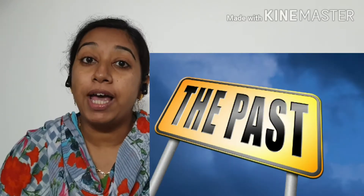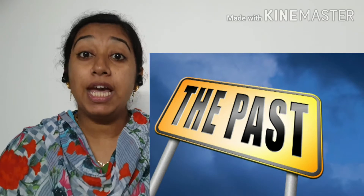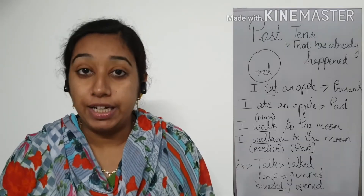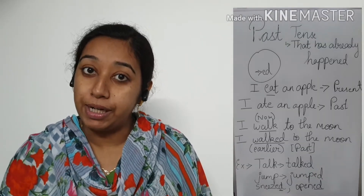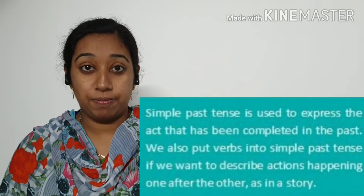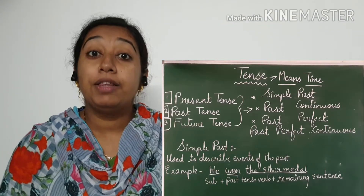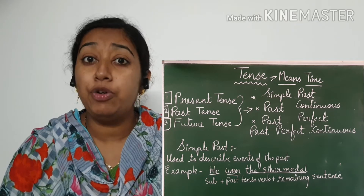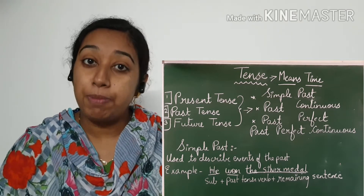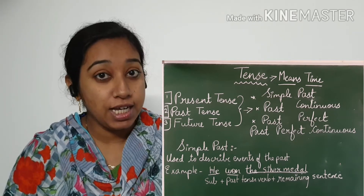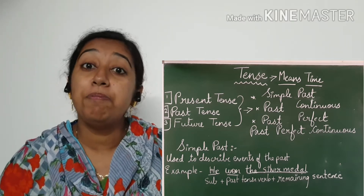Now we are going to learn past tense. What do you mean by a past tense? It indicates the event which has already happened in the past — completed actions in the past. The past tense is divided into four divisions: simple past, past continuous, past perfect, and past perfect continuous. We are going to learn two of these divisions.